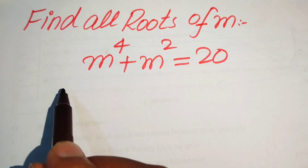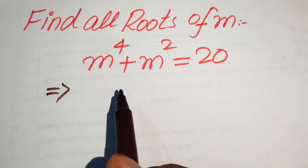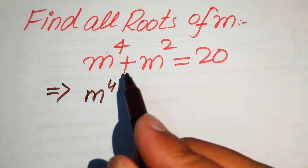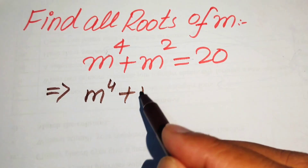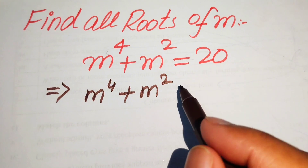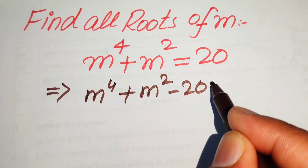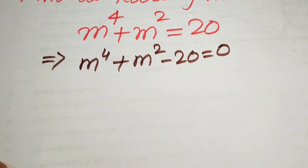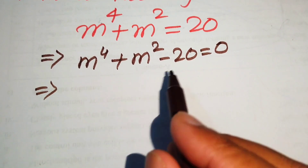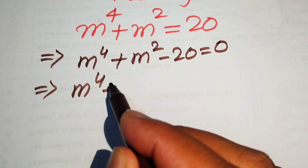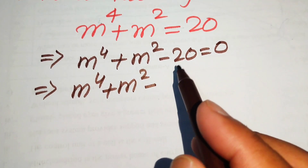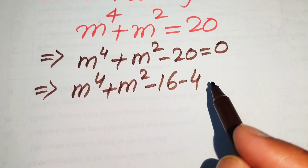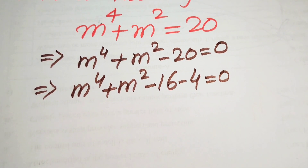The very first step is to rewrite this equation. We have m to the power of 4 plus m squared, and we move 20 to the left-hand side, giving us minus 20, so the whole equation equals 0. In the next step, we break minus 20 and write it as minus 16 minus 4, since minus 16 minus 4 equals minus 20, and the whole equation equals 0.